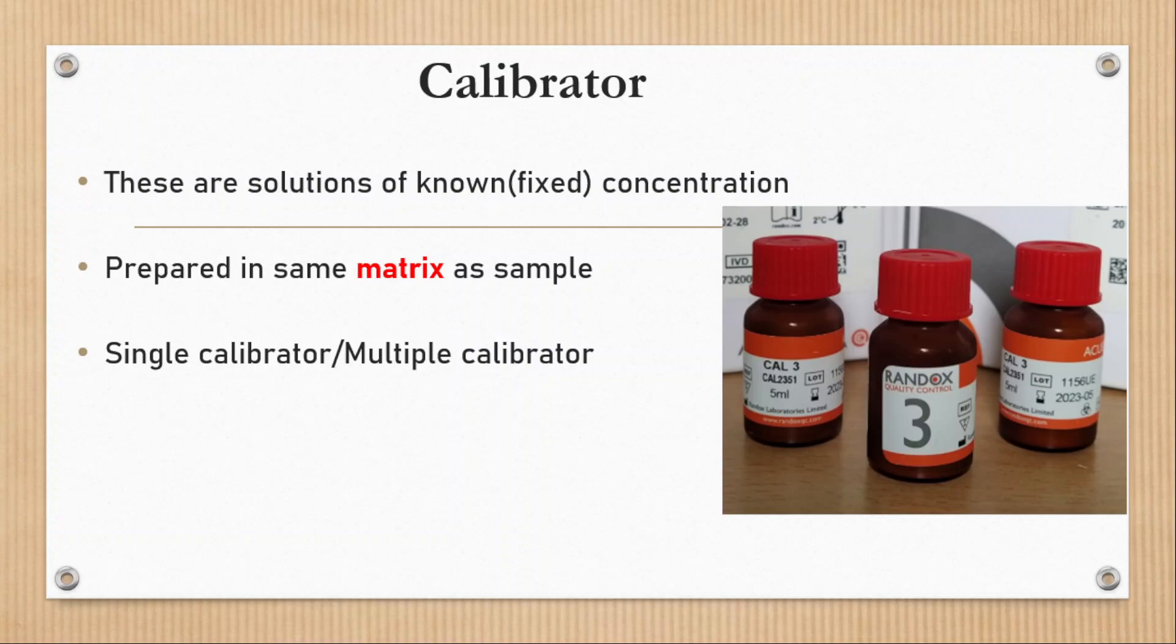Coming to the definition, calibrators are the solution of known concentration or fixed concentration prepared in matrix same as sample. That means if sample is plasma, then matrix of calibrator is also same as plasma. Calibrators are supplied through manufacturer either in liquid or in lyophilized form.